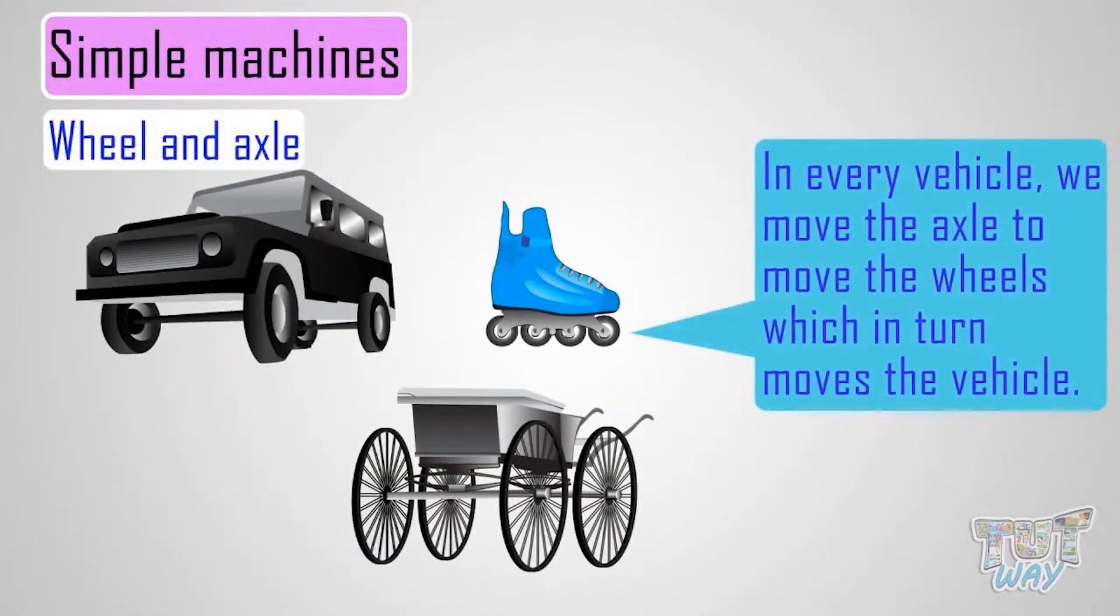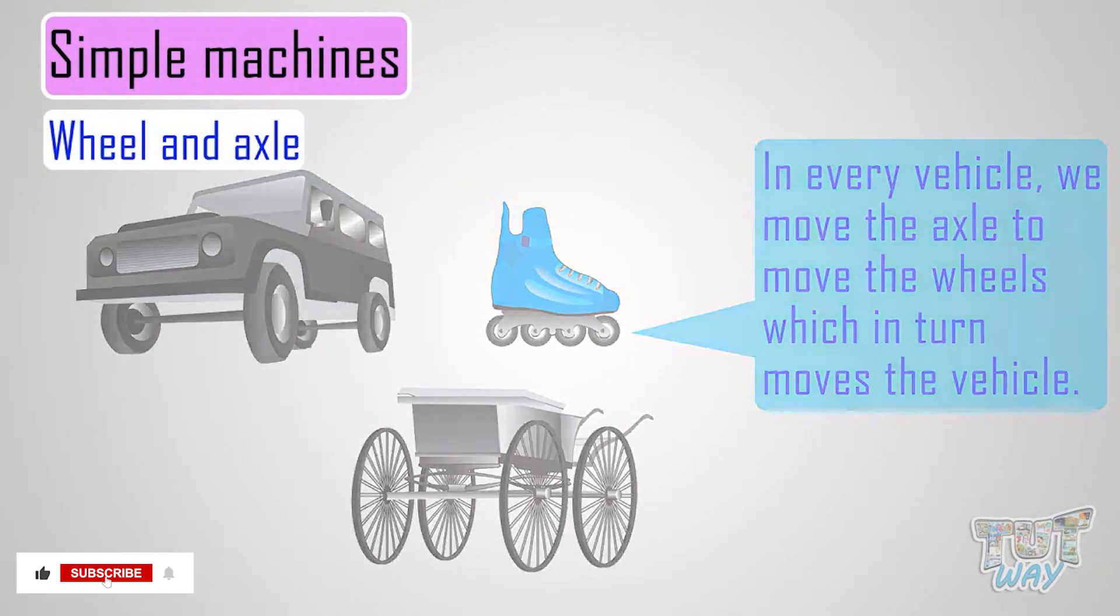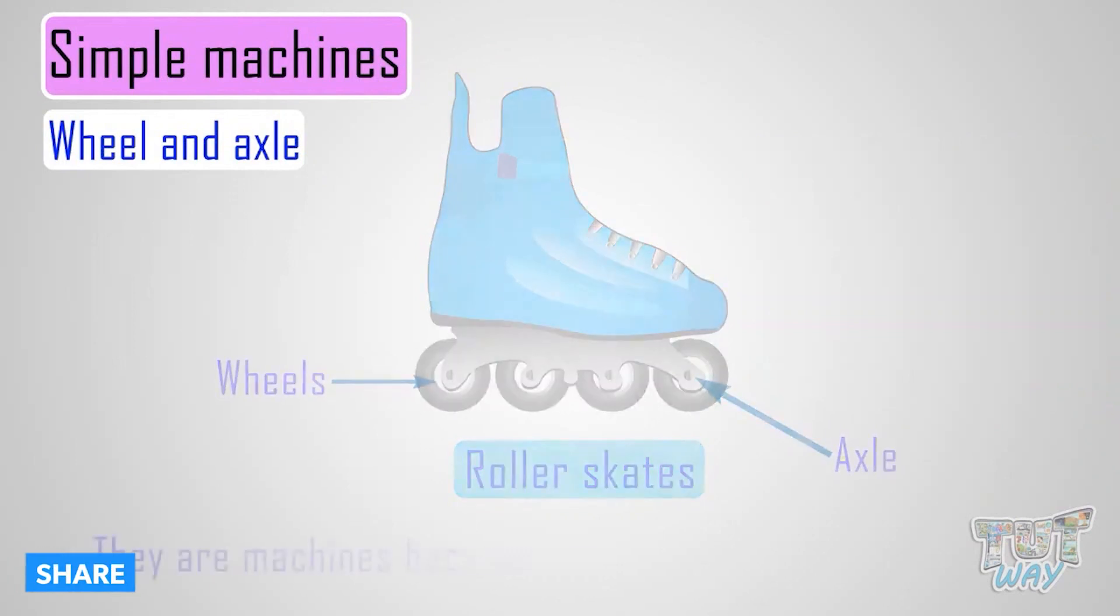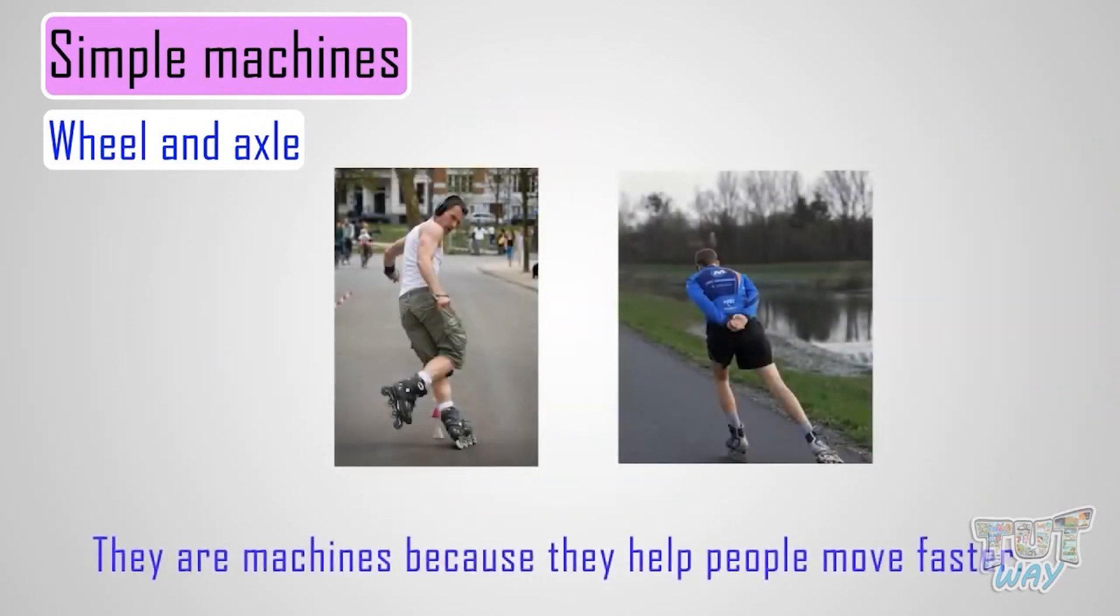We move the axle to move the wheels, which in turn move the vehicle. Let's see some examples. Roller skates are made up of many wheels and axles. They are machines because they help people move faster. So you can find a wheel and axle used almost everywhere.